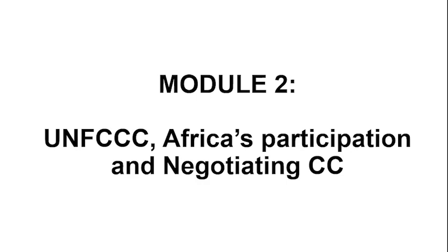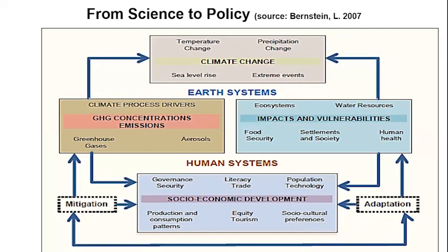Now let's go into our second module. Recall that our first module was on the science of global warming and climate change. Now that you understand there is a problem, the United Nations decided that this is not one country's problem — the whole world must come together to address this issue. Therefore, module two is on the United Nations process to address climate change, realizing that there are earth systems and human systems, and both need to be brought together under the purview of the United Nations.